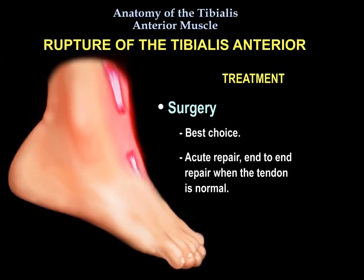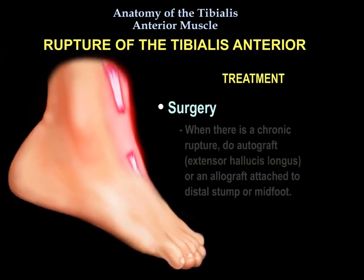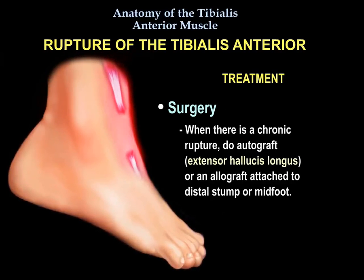For acute repair, end-to-end repair is performed when the tendon is normal. When there is a chronic rupture, extensor hallucis longus tendon autograft or allograft is attached to the distal stump or mid-foot.